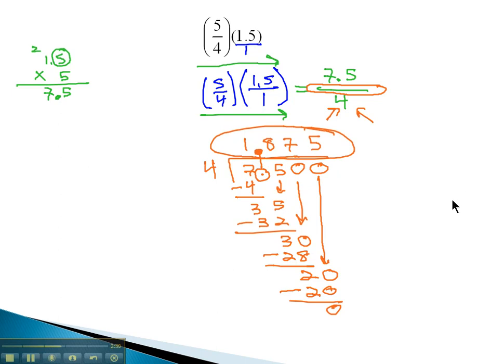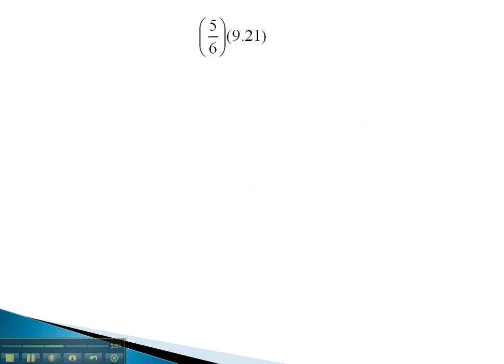Let's try another example, where we put the decimal over 1, which gives us the ability to simplify. Here, we'll put the 9.21 over 1, so we have 5 sixth times 9.21 over 1.